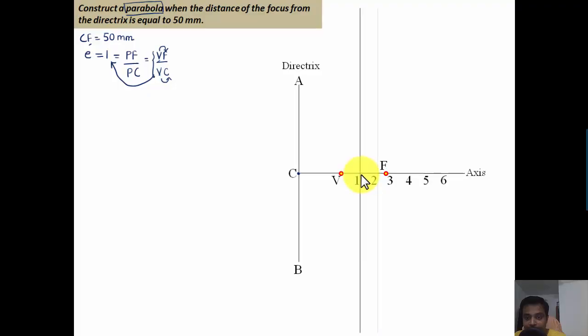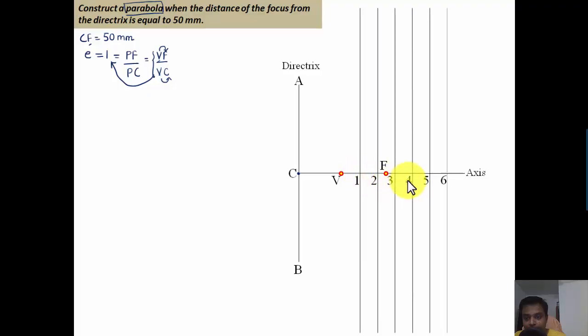Now I'm going to make vertical lines passing through these points that I've made, like this. You can do so very easily with the help of a mini drafter.